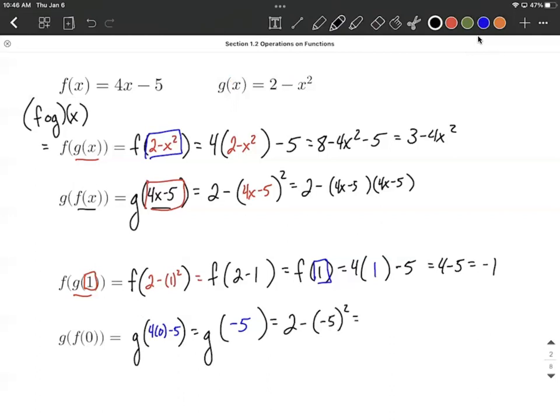So here we have 2 minus negative 5 squared. A little bit of simplifying down. Again, we'll do the exponent first. So negative 5 times negative 5 makes positive 25. And then 2 minus 25 makes negative 23.